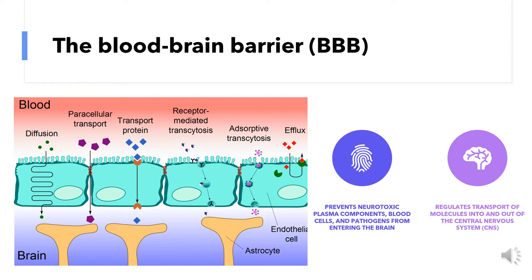The endothelial cells that form the barrier are tightly connected one to another, thanks to the tight junctions, in order to minimize as much as possible the paracellular transport. The flux is highly controlled because even when solutes pass because tight junctions are a little damaged, specific pumps repump the solutes back to the blood vessels. This is the reason why it is so difficult to cure brain disease — the drug often is unable to pass the blood-brain barrier.